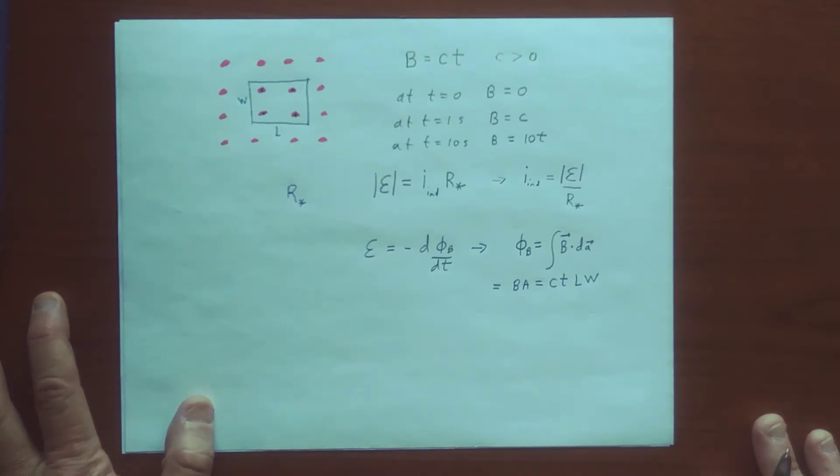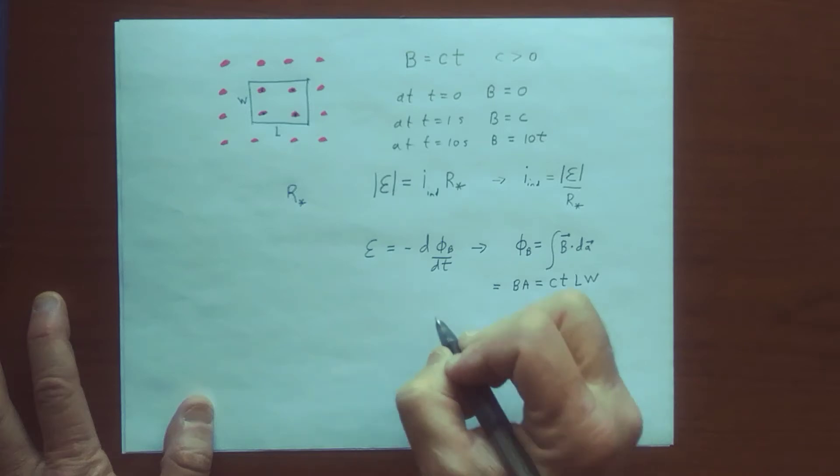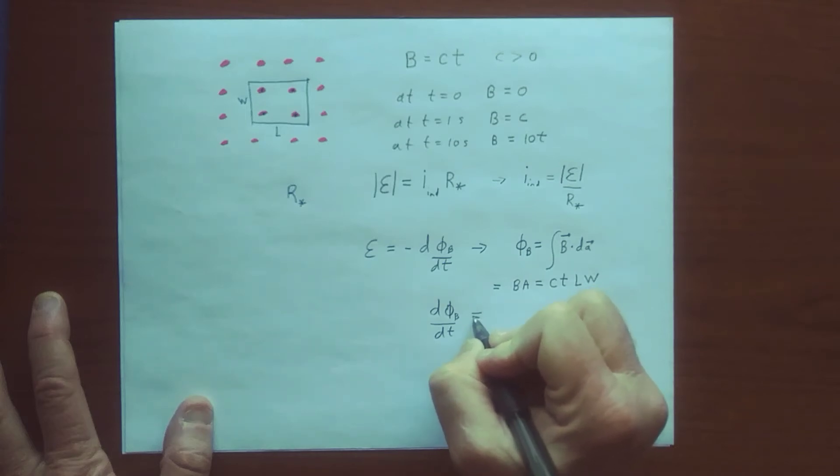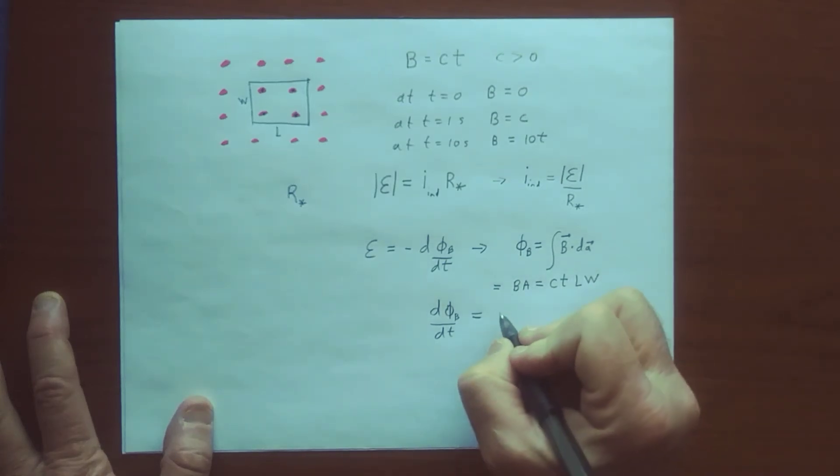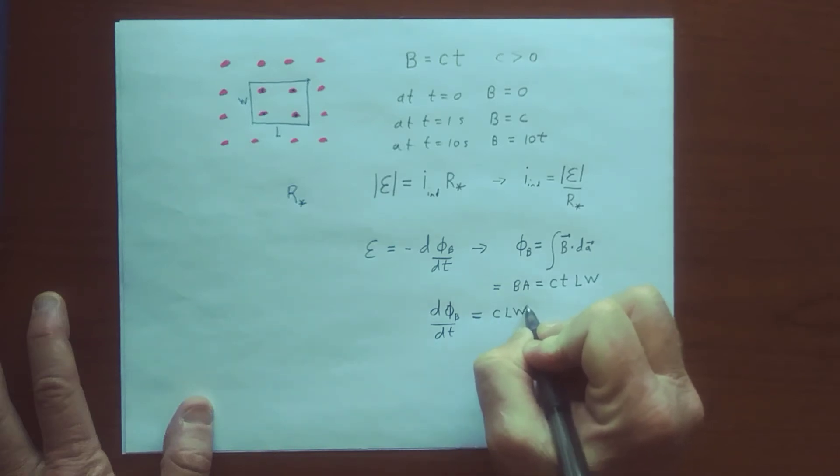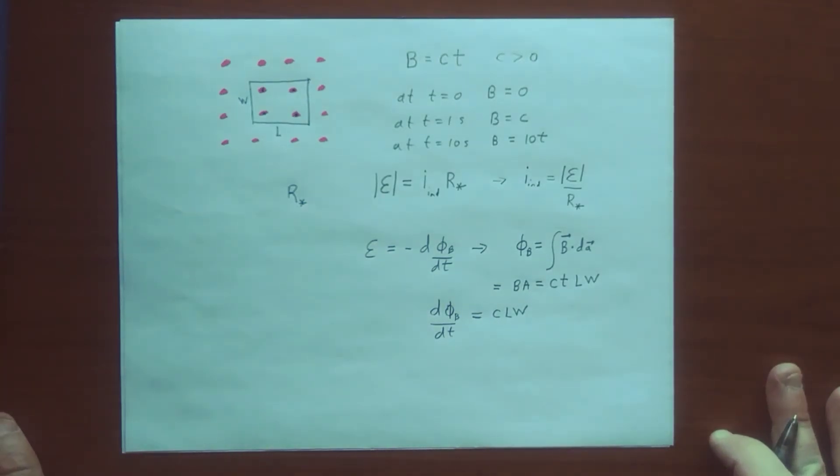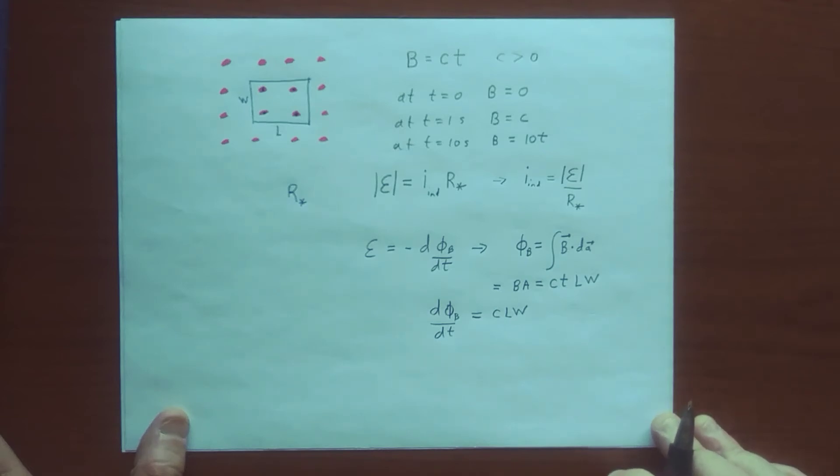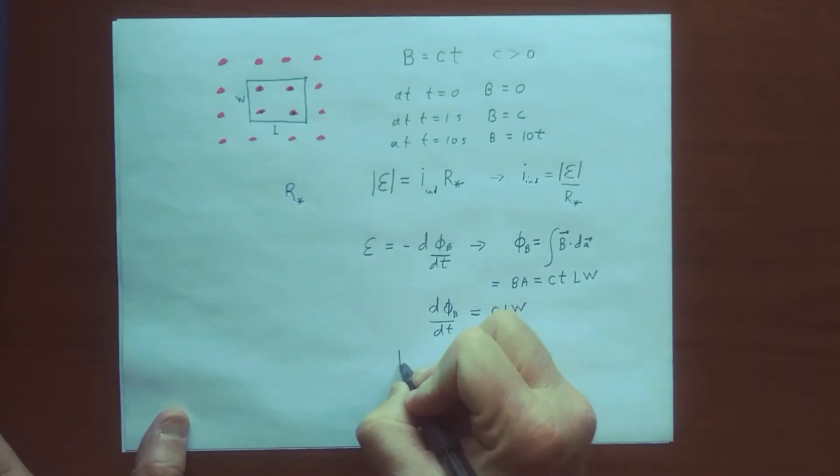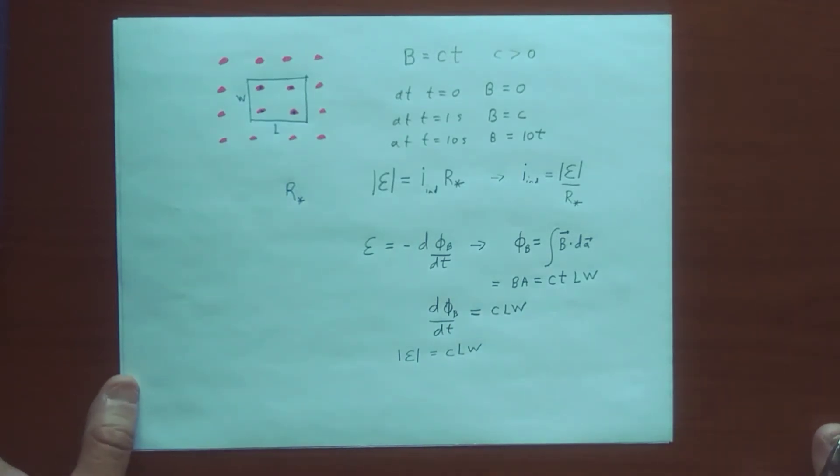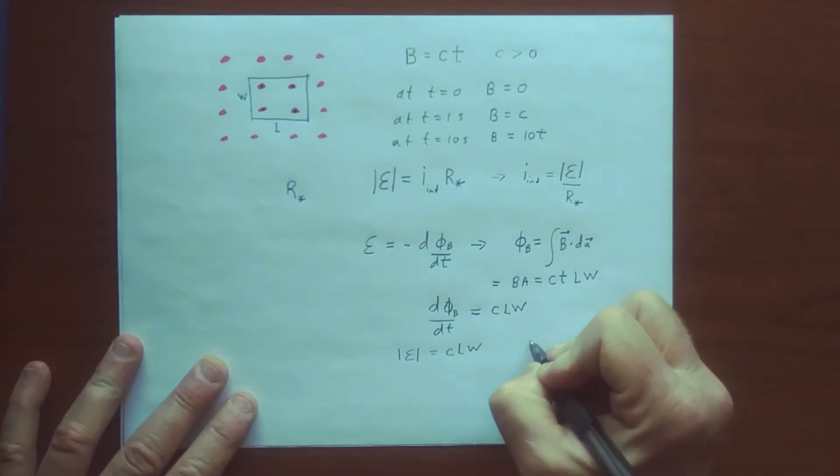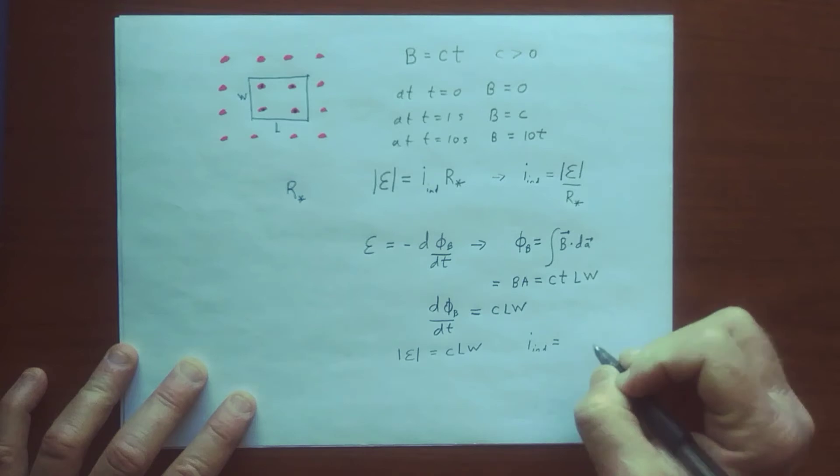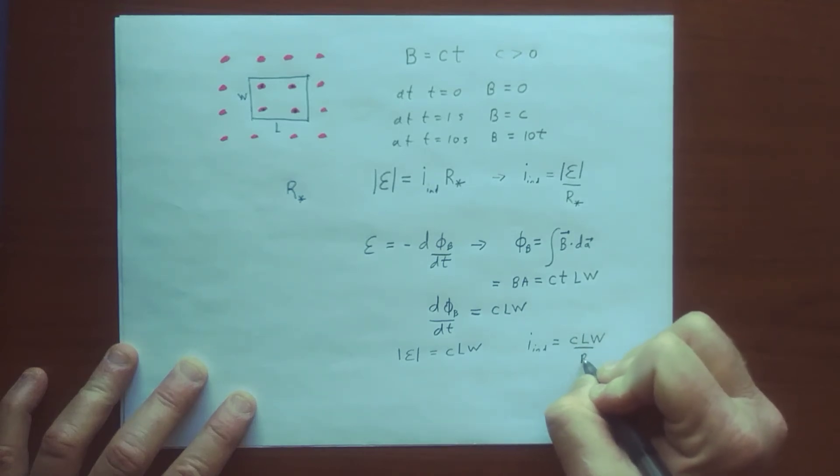And so clearly there's an EMF generated. So in terms of dΦ by dT, we have to take the derivative of this, and that just gives us C L times W, because it's dT by dT, and that gives us one. So in terms of the magnitude of the EMF, these are all positive quantities, so we can say that the magnitude of the EMF is just C L times W. So the EMF is a constant quantity, and therefore the induced current is just C L times W over R star.